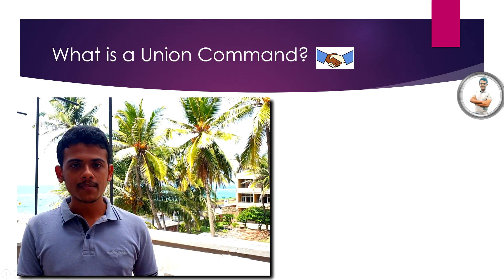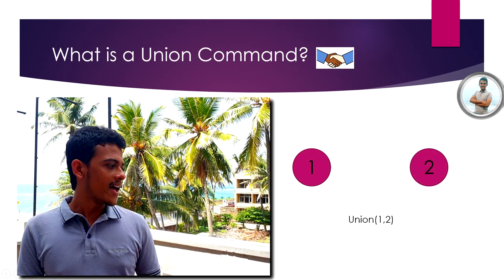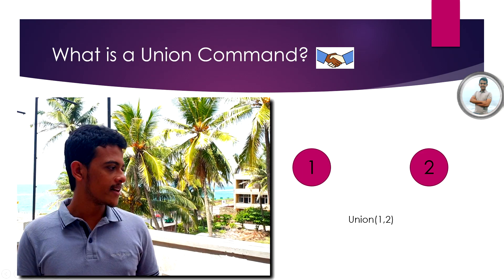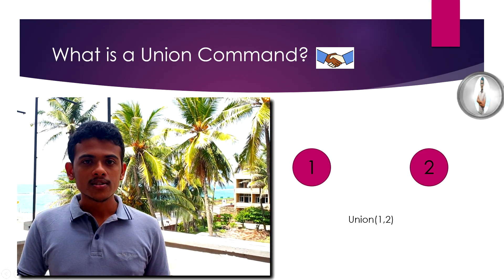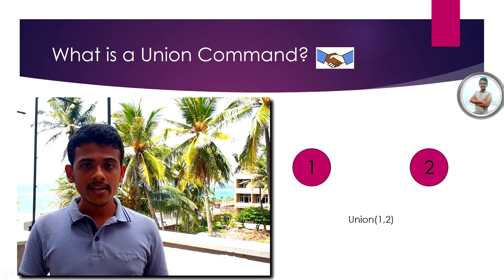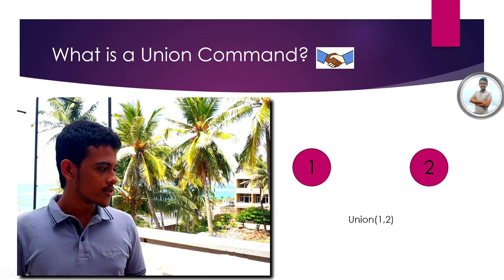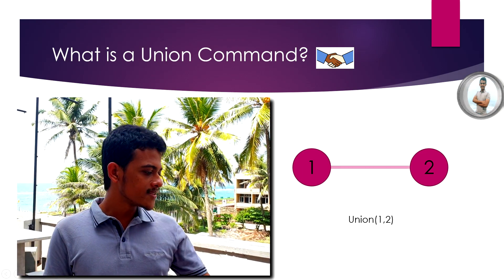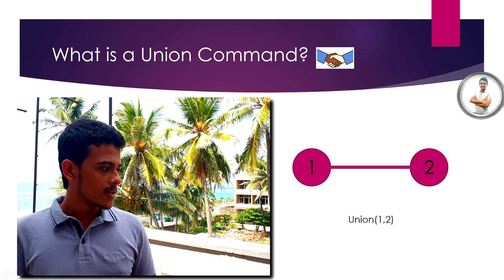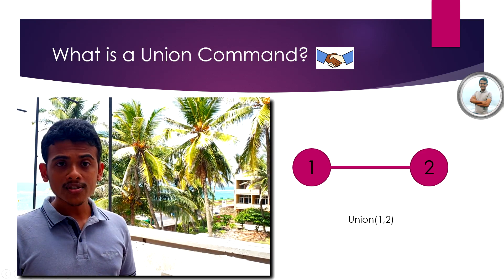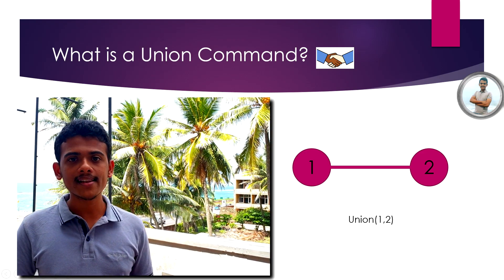I'm going to explain about Union commands. As you can see here in the diagram, there are two objects, 1 and 2. Now I'm going to give the command Union(1, 2). After I give the command, both of those objects are going to get connected using one single line.